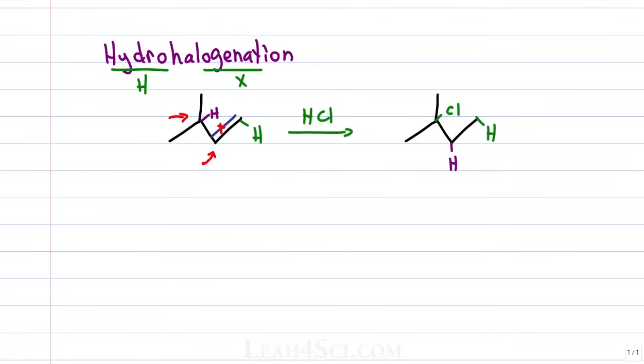Because we have a carbocation intermediate, we do not have syn or anti-addition because the chlorine can add from either face of the sp2 hybridized carbocation.